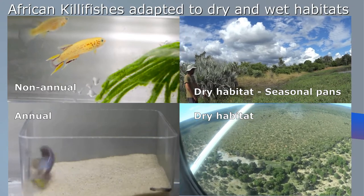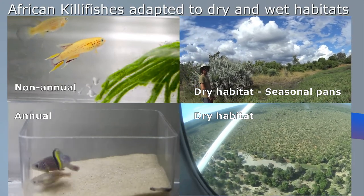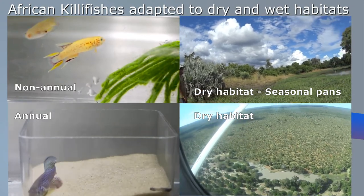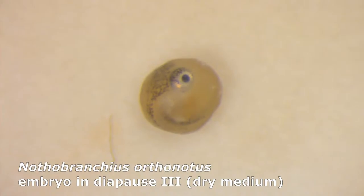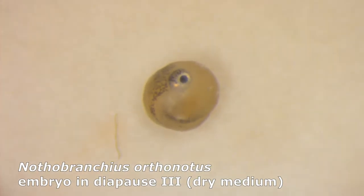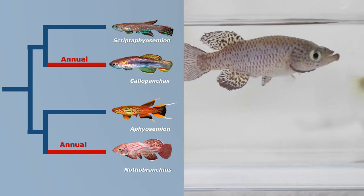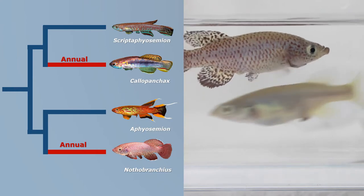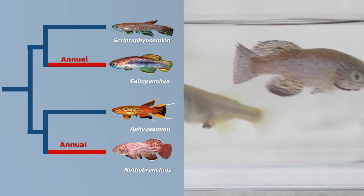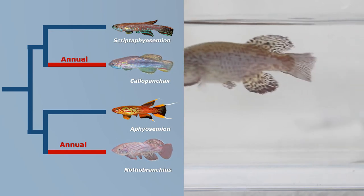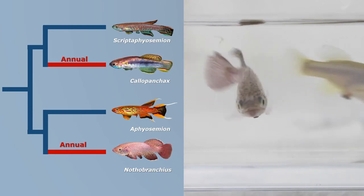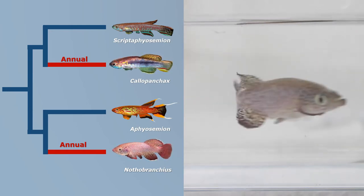Their embryos can survive in the absence of water for years. Two independent transitions from wet to dry lifestyles have taken place: one in the genus Calopanchex, the other in the genus Nothobranchius.